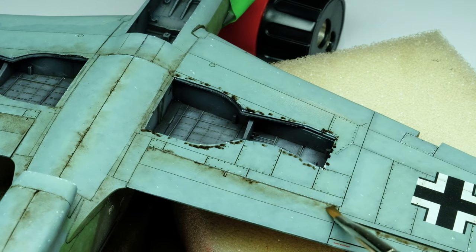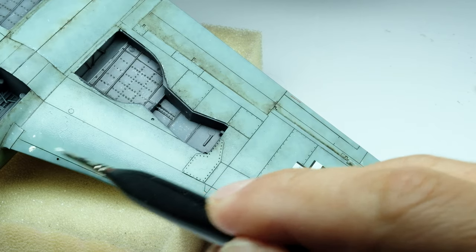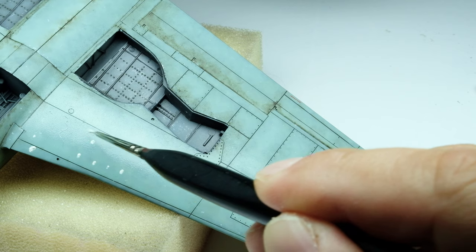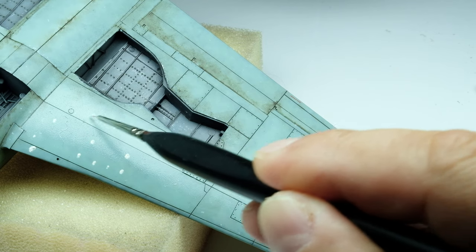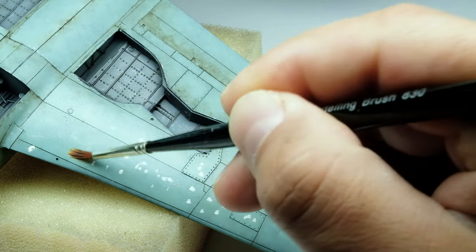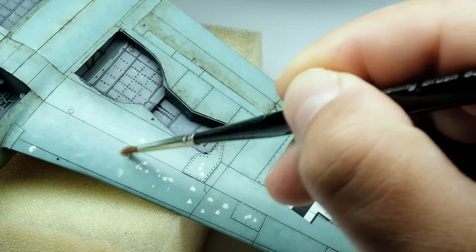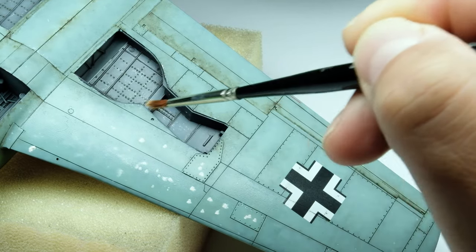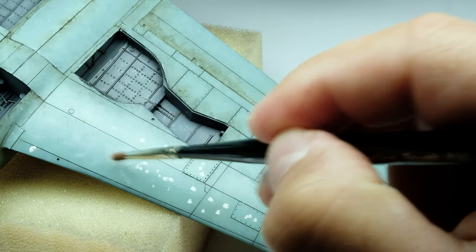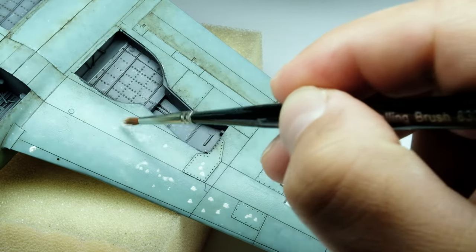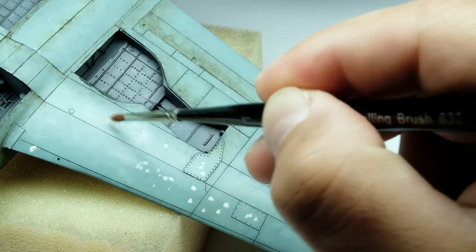After working with the sepia oil color and letting it dry thoroughly, I took the Abteilung 502 faded white and gave some contrast to the center of the panels, making the plain surface more weathered. The application is the same as before. Wet the surface and apply some oil dots and lines, but this time I blurred the white oil color with a soft round brush in a tapping motion.